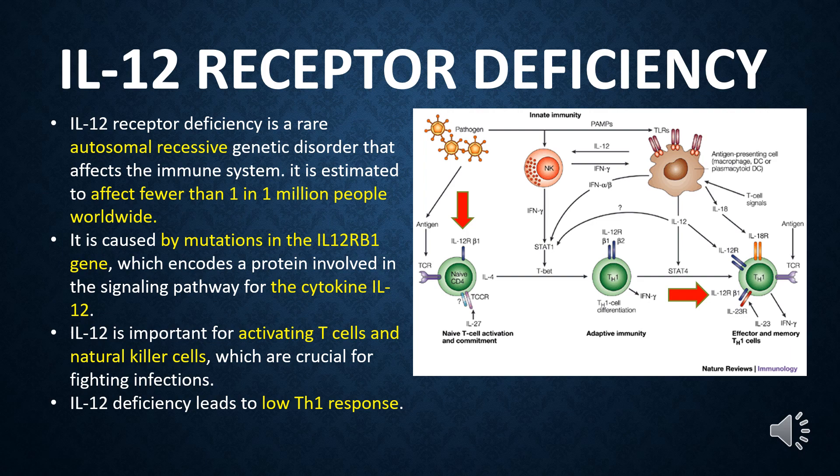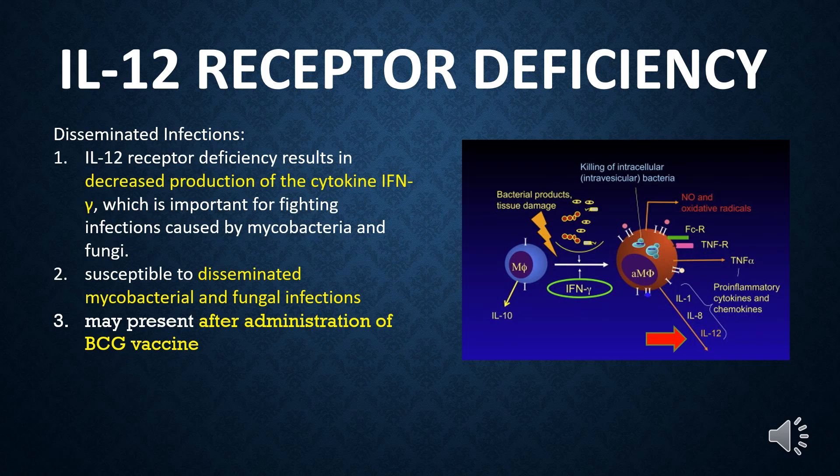IL-12 is important for activating T cells and natural killer cells, which are crucial for fighting infections. IL-12 deficiency leads to a low Th1 response. IL-12 receptor deficiency results in decreased production of the cytokine interferon gamma, which is important for fighting infections caused by mycobacteria and fungi, causing patients to be susceptible to disseminated mycobacterial and fungal infections.